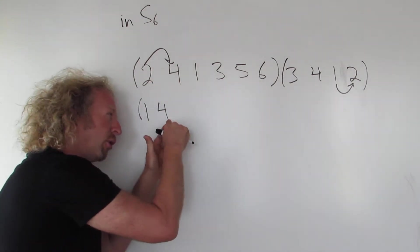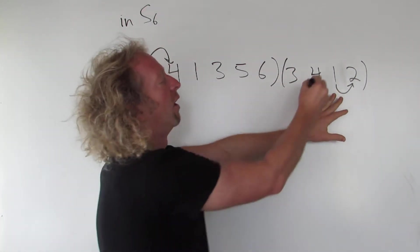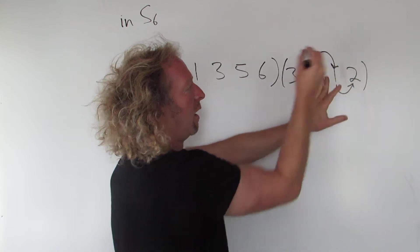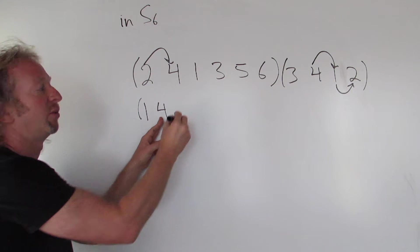Then you just keep going. So you go over here. Four goes to one. Now you look for the one. One goes to three. That means four goes to three.